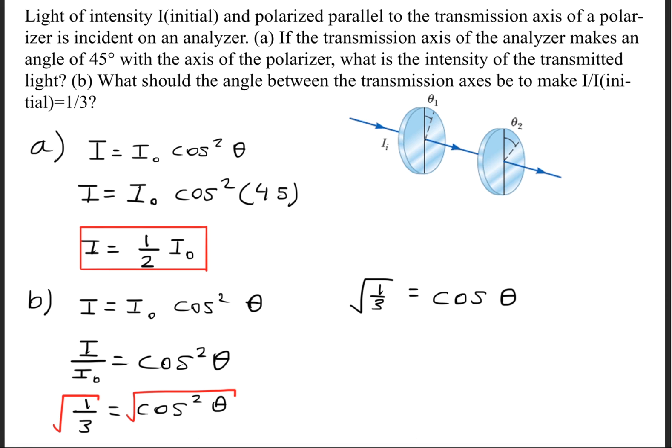And now what we'll do is we'll take the square root of both sides so that we get the square root of one-third is equal to cosine theta. What we need to do to find theta is we need to take the inverse cosine of the square root of one-third, and that'll give us an angle of 54.7 degrees.